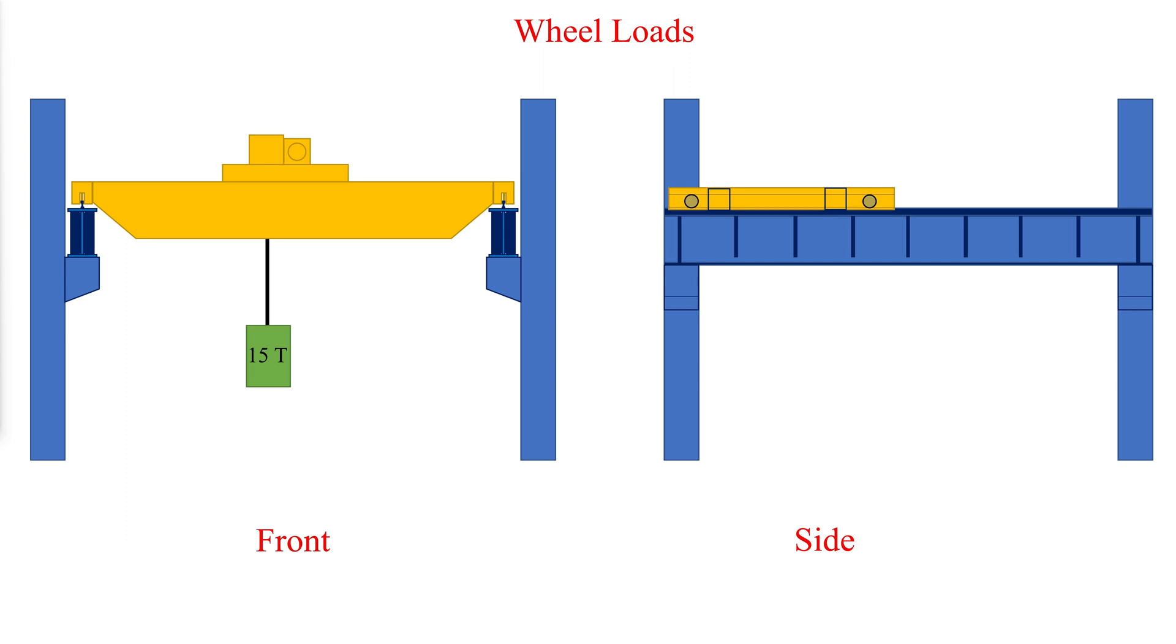ASCE 7-16 defines the maximum wheel load as the loads produced by the weight of the bridge plus the sum of the rated capacity and the weight of the trolley. The trolley position on its runway should be at the location where the resulting load effect is maximum.